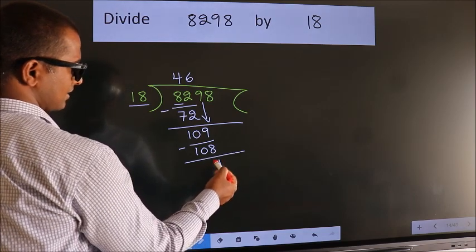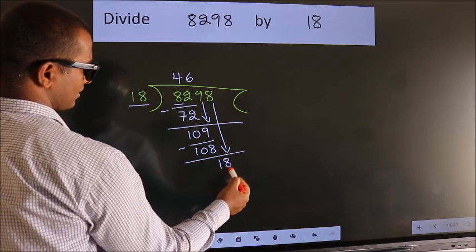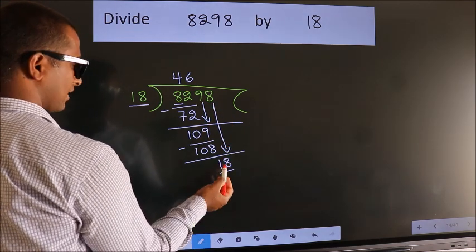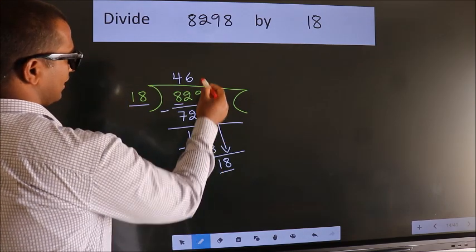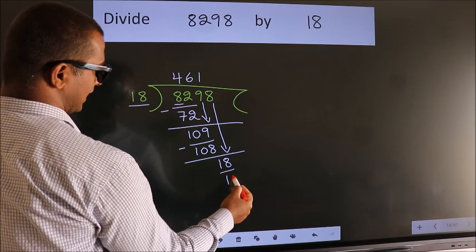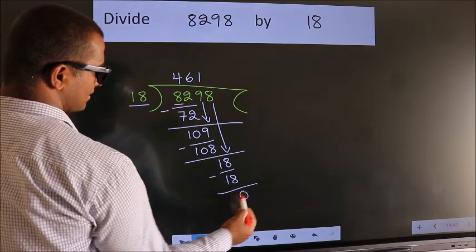After this, bring down the next number. So 8 down, making 18. When do we get 18? We get 18 in the 18 table: 18 times 1 equals 18. Now we subtract. We get 0.